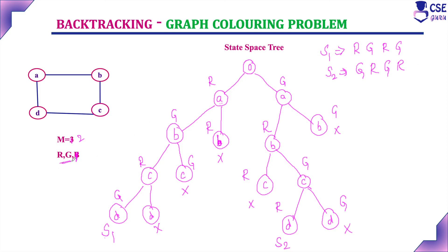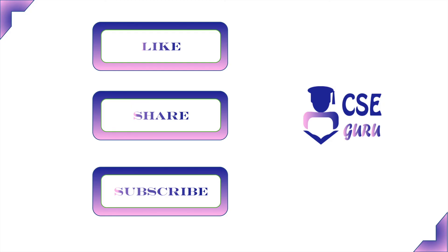With three colors, we constructed the state space tree with A=red for practice. You can similarly construct the state space tree with A=green and A=blue as separate exercises. This is the procedure to implement backtracking technique to solve the graph coloring problem. Thank you for watching this video.